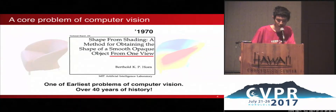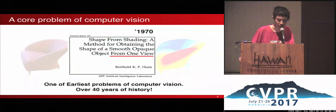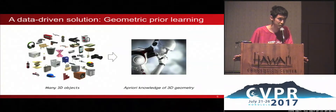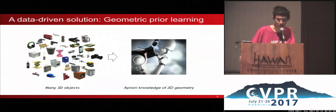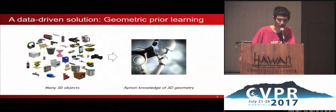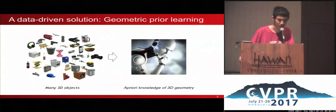How is this possible? Monocular 3D perception is one of the earliest problems in computer vision, with methods like shape-from-shading dating back more than 40 years ago. But our approach is different. We do not rely solely on any illumination or geometric tricks. Our approach is a data-driven solution. We want to present our neural network with a large collection of 3D shapes in the hope that it can learn a prior of how a 3D object should look like. And when it sees a new image, it can retrieve from its knowledge what the object's shape should be.